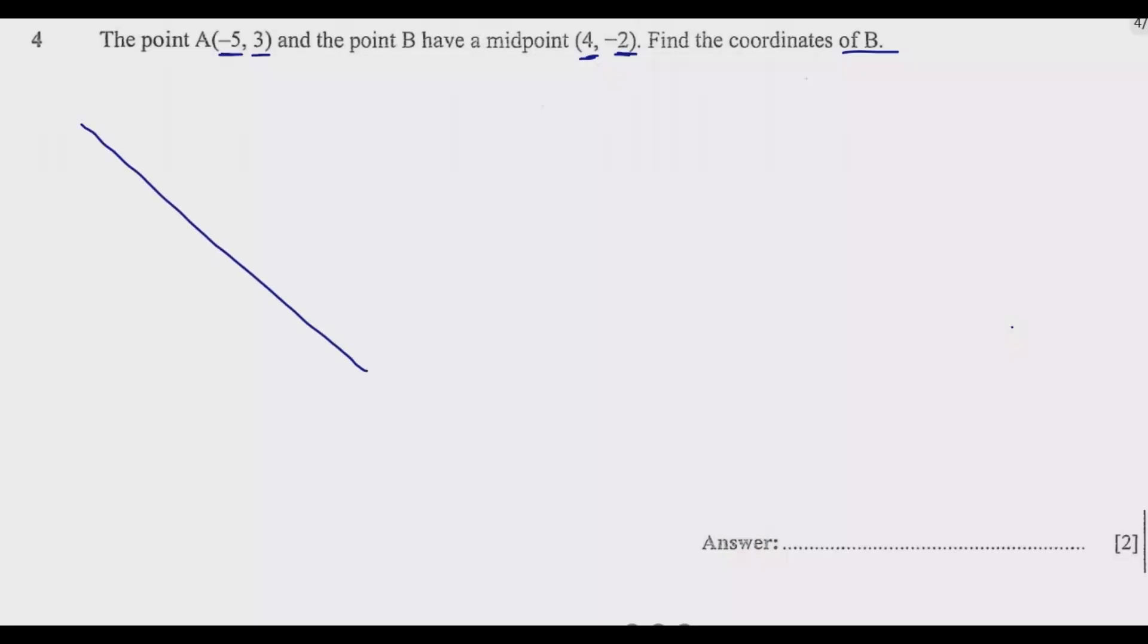Let me assume that this is the line. So we have A which is this point, negative five comma three, then we have B somewhere here, then you have the midpoint which is in such a way that this distance and this distance are equal.